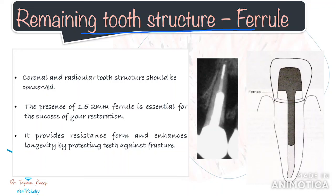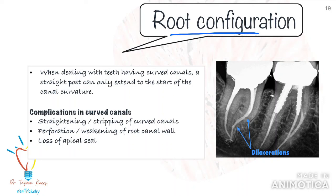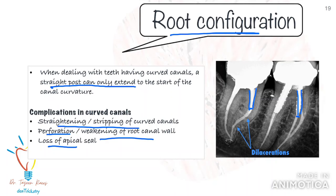Now we come to tooth-related factors. We have already discussed the importance of the remaining tooth structure — that is, ferrule and ferrule effect — for retention and resistance form of the tooth cemented with the post. What you have to remember is that you have to preserve as much of the tooth structure that is already present. Whenever possible, coronal and radicular tooth structure should be conserved. Do not enlarge the post space unnecessarily as it will only weaken the root and increase its chances of fracture.